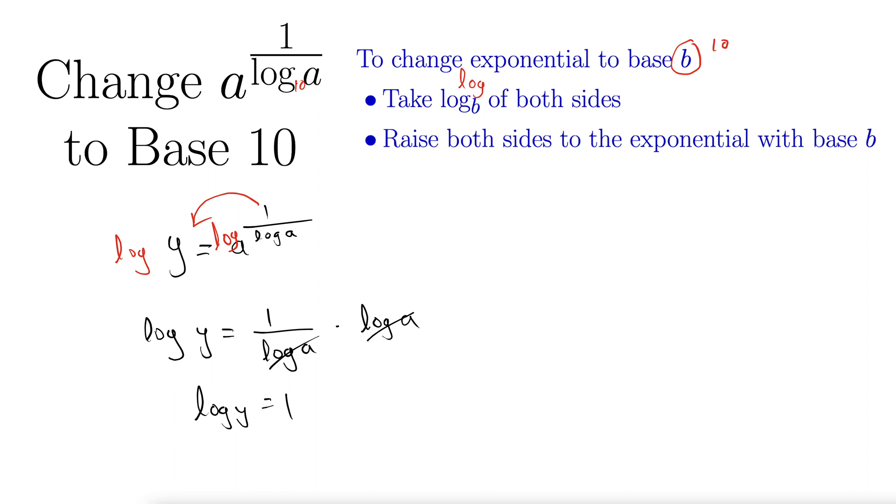Now it says in the next step, raise both sides to an exponential with base b. Here we want base 10. So I'm going to raise both sides to base 10.